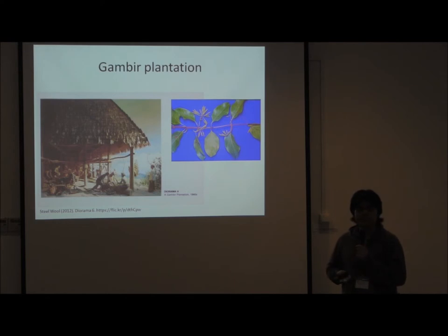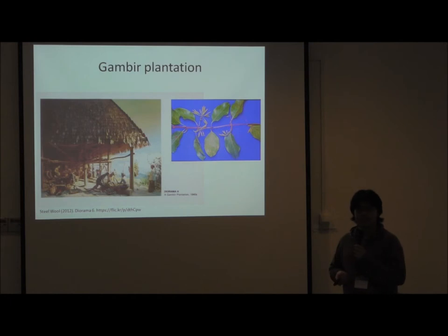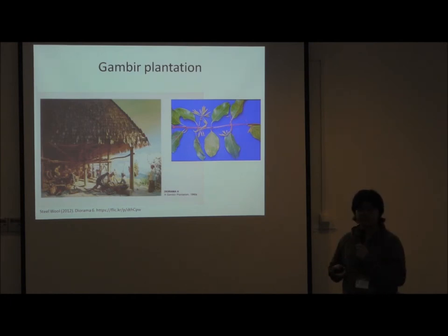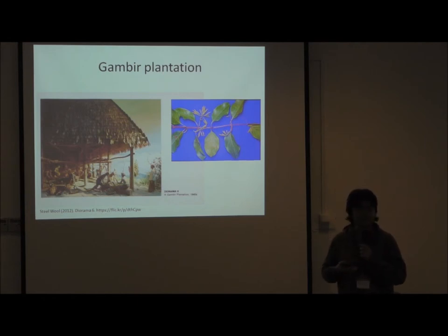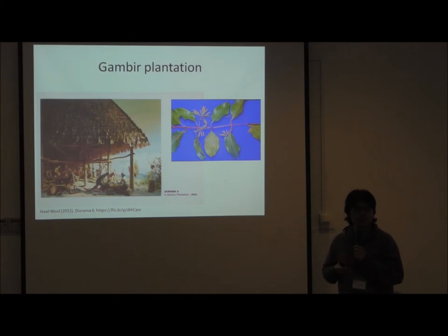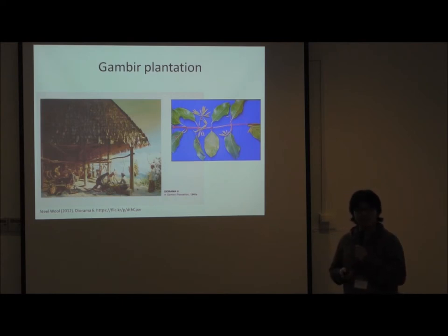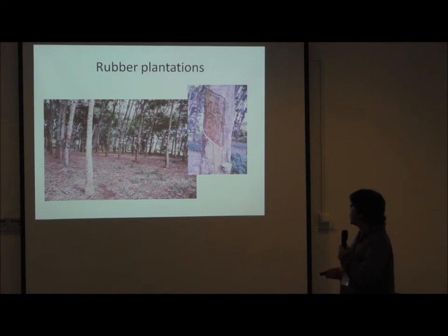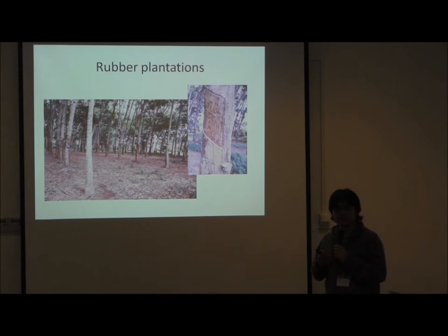Two major conditions shaped the land. First is gambier cultivation — it's a highly destructive way of cultivation to harvest the tannin from the gambier plant. One hectare of gambier requires one hectare of timber as firewood, making it a very destructive way of planting and clearing the forest. Subsequently we see the rise of rubber plantations in Singapore.